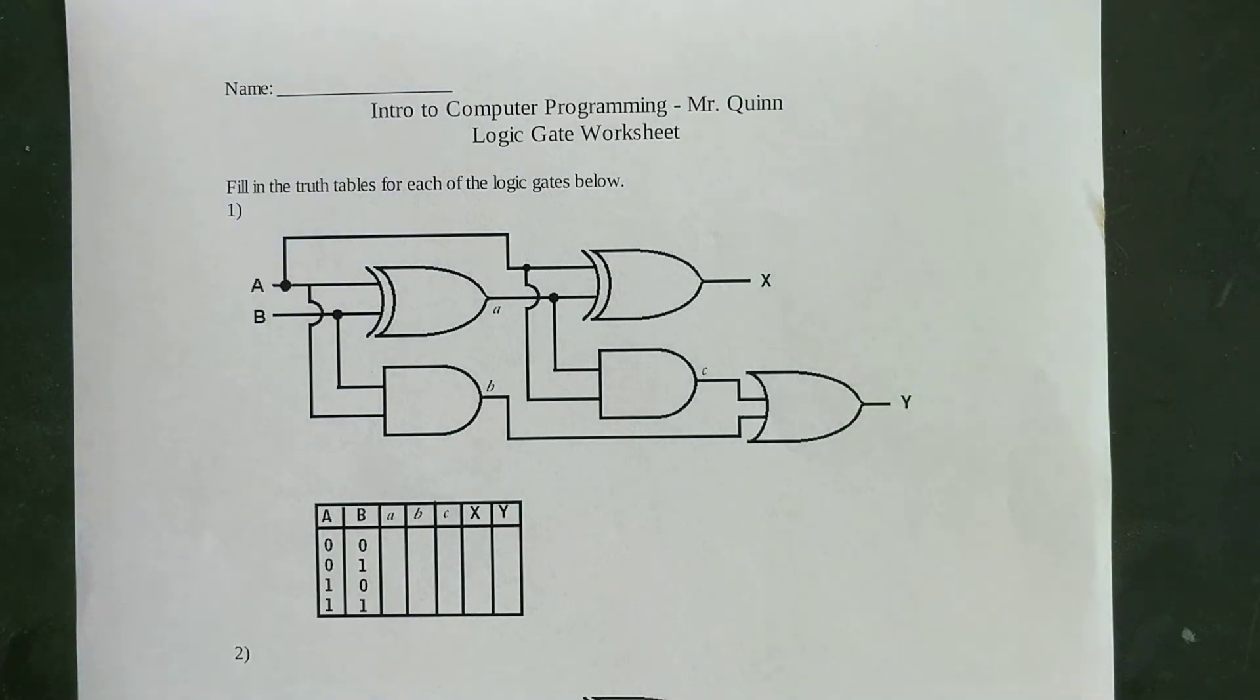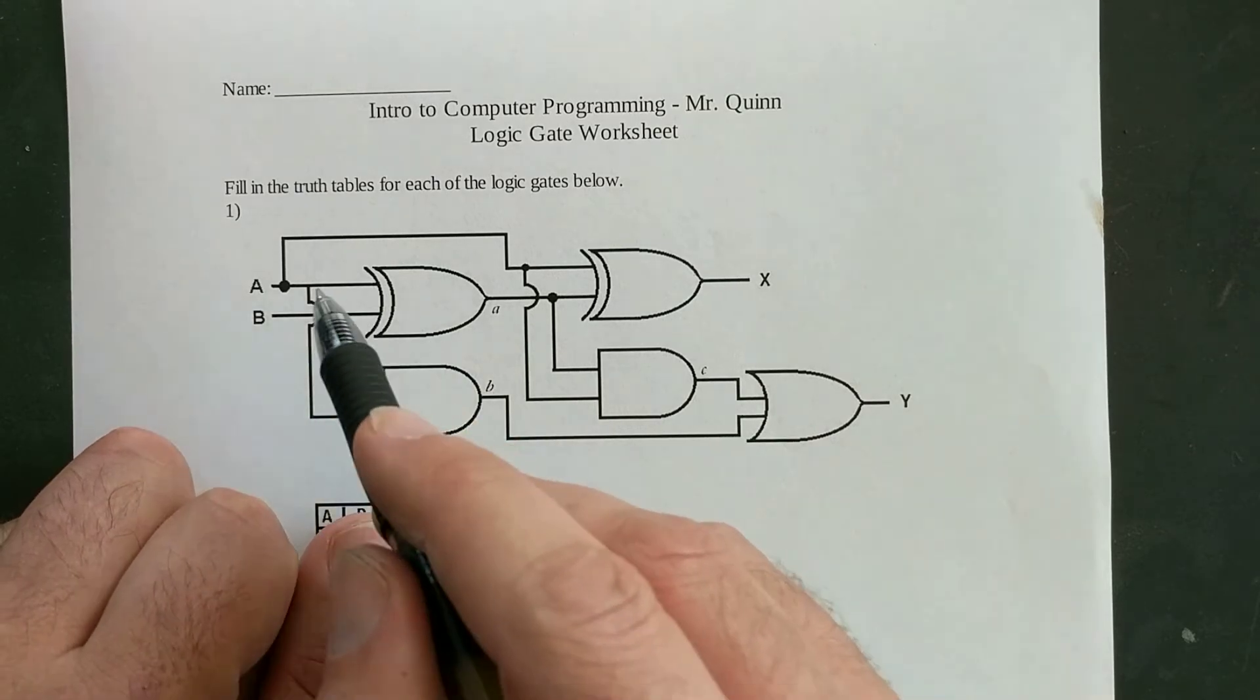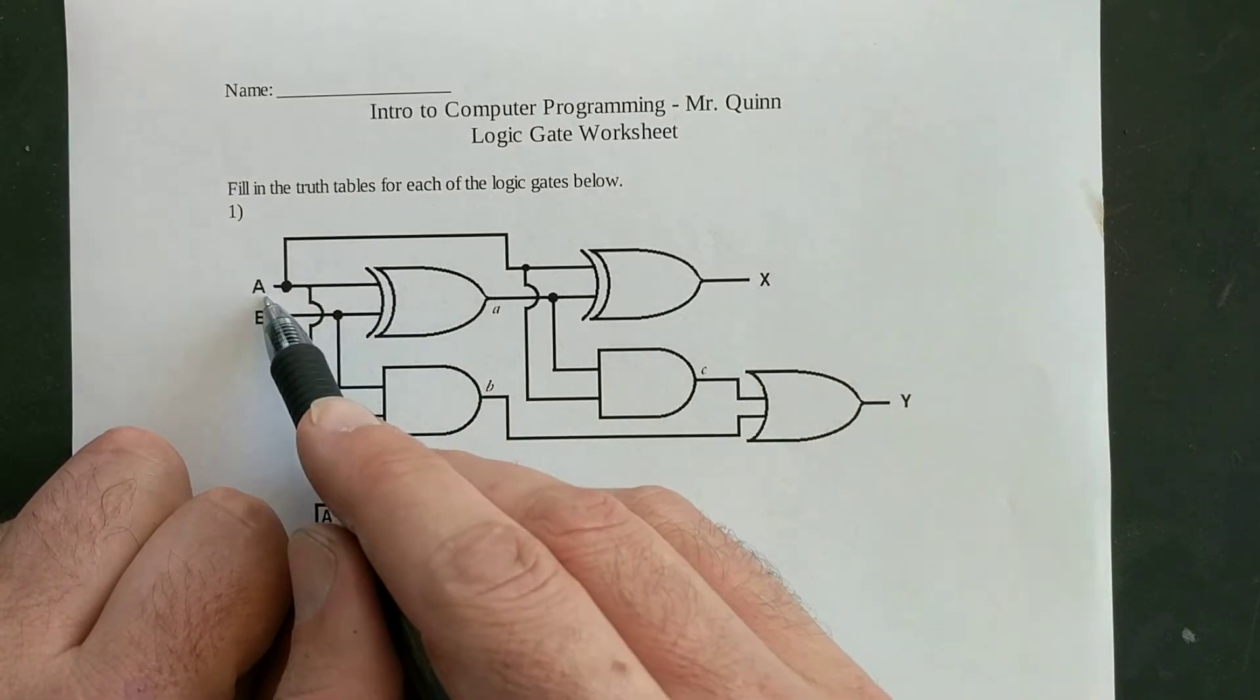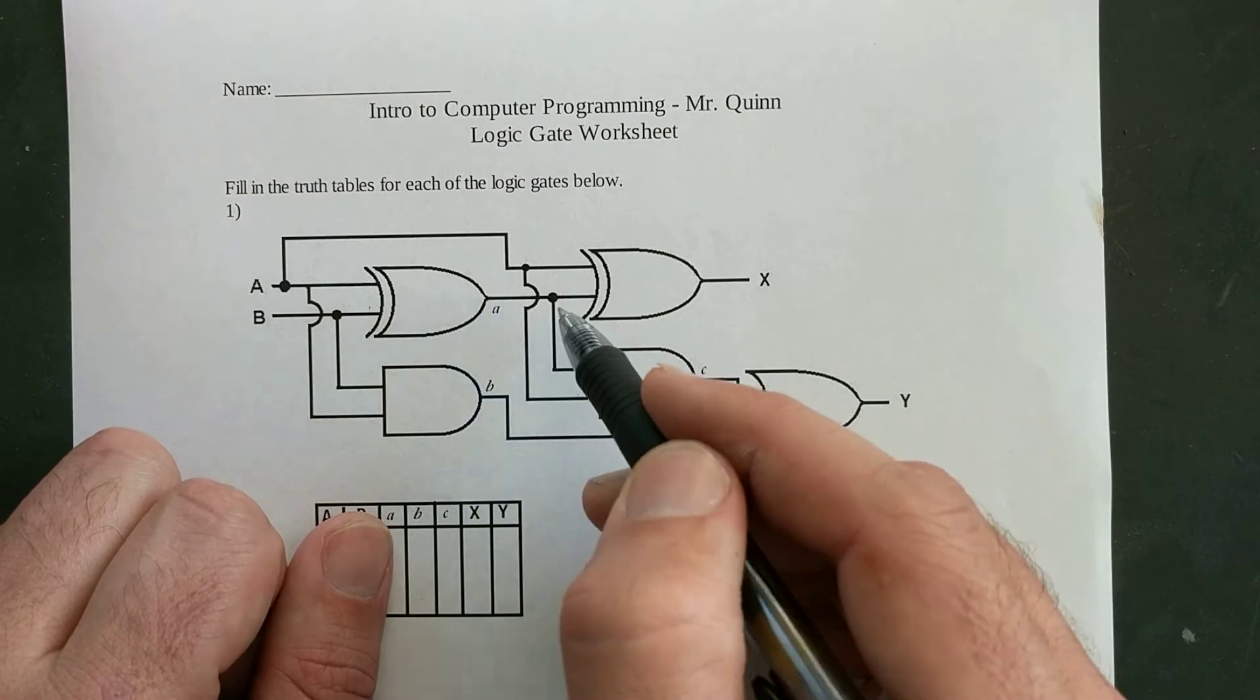Logic gates are little collections of circuits that will take some input, and these diagrams represented as wires labeled A and B, take some input and then give you a different kind of output.